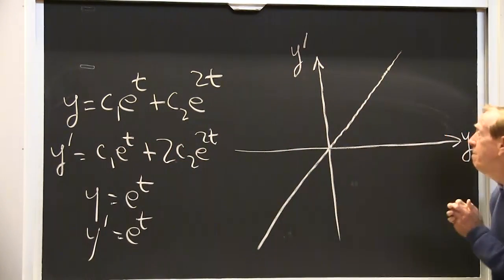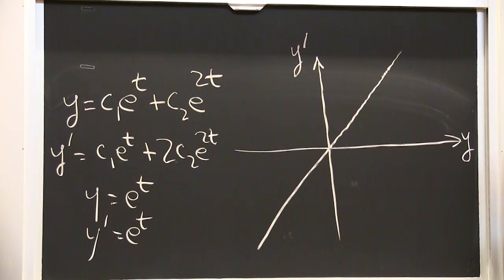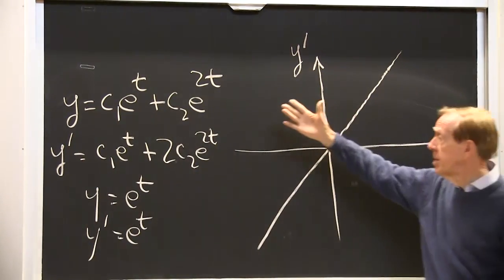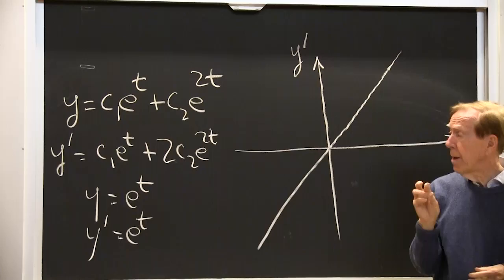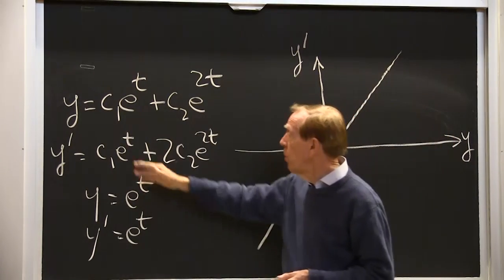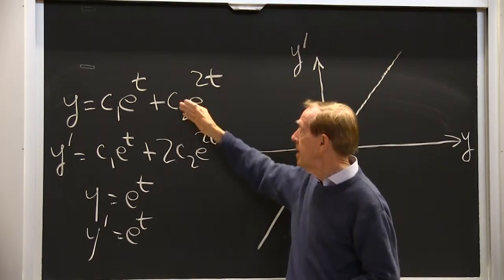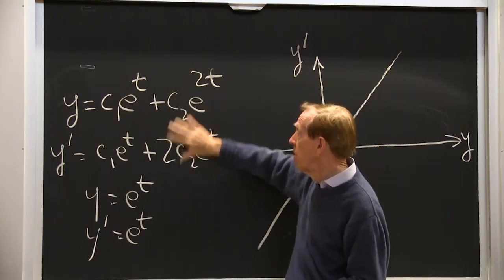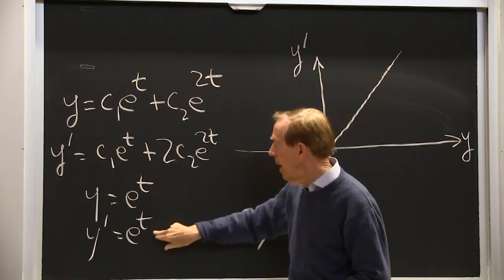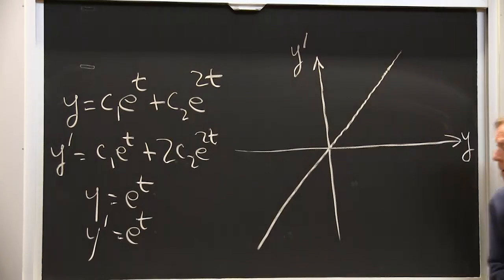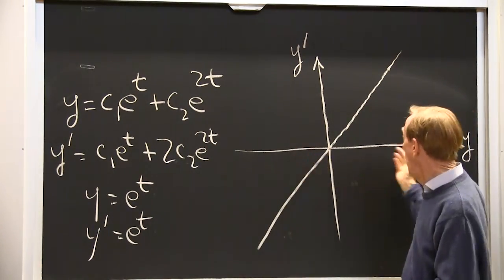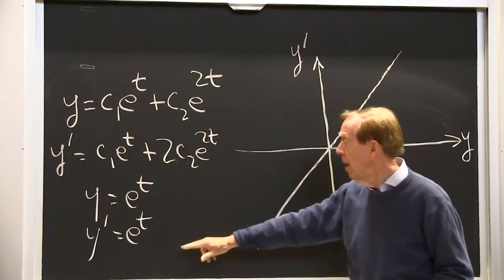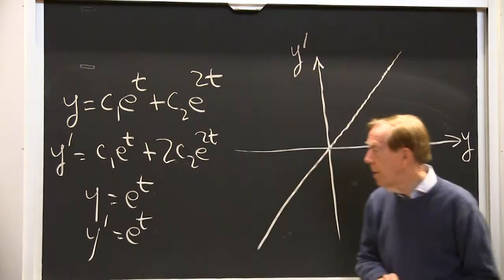So here are my solutions. s is one or two. Then the derivative has a one or a two. Here's my plane. I want to draw on that the solutions. I actually have formulas. I just want to draw them. One example would be let c1 be one and let c2 be zero. c1 is one. I just have that picture.